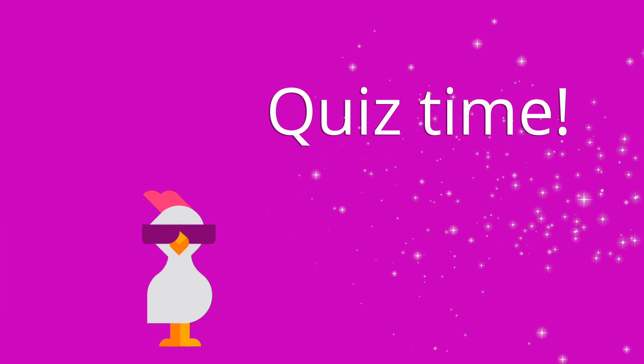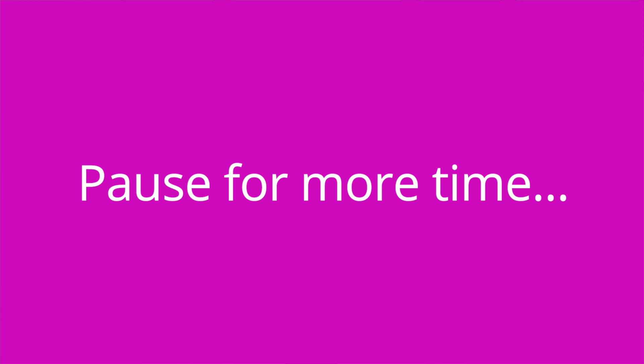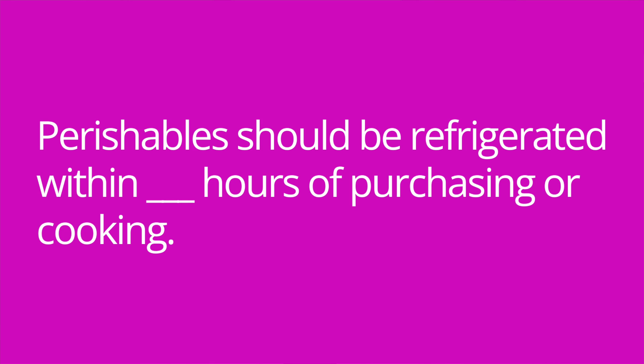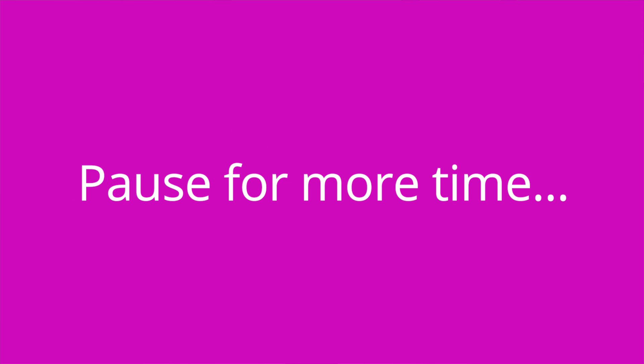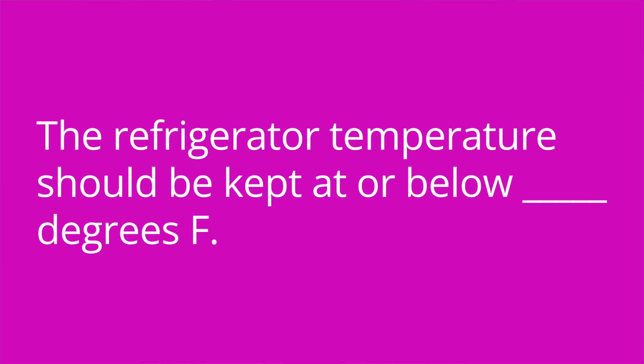It's quiz time and I've got three questions for you. Question number one: unpasteurized milk or juice increases the risk for foodborne illness — true or false? The answer is true. Question number two: perishables should be refrigerated within blank hours of purchasing or cooking. The answer is two hours, or one hour if the outside temperature is above 90 degrees Fahrenheit. Question number three: the refrigerator temperature should be kept at or below blank degrees Fahrenheit. The answer is 40.